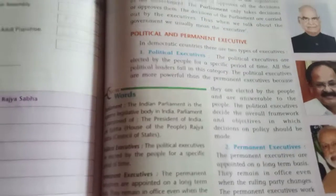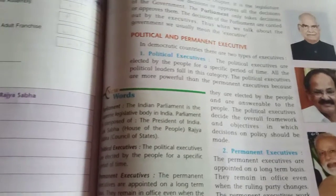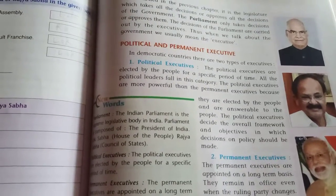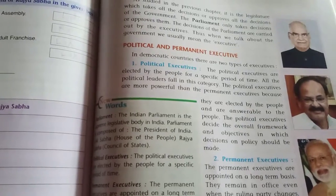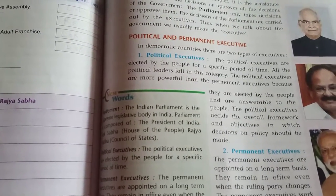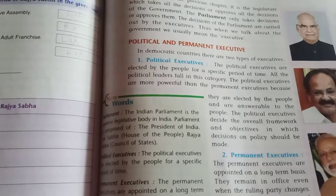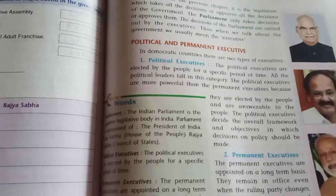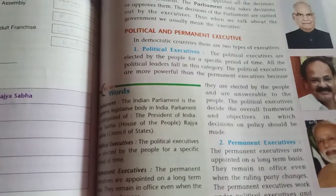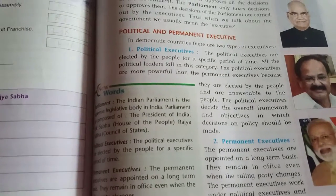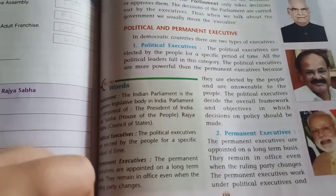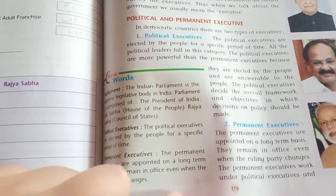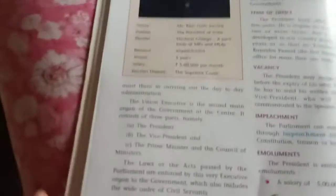For example, in the 2019 Lok Sabha election, the winning party formed the government. Again in 2024, if the party changes, the political executives will change with the change of government, but the permanent executives will remain the same. They are less powerful than the political executives — they work under the political executives and carry out their orders.